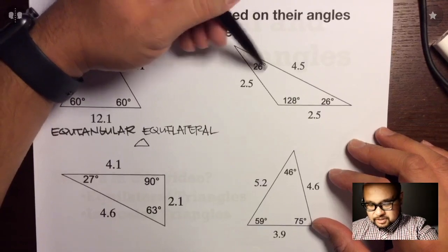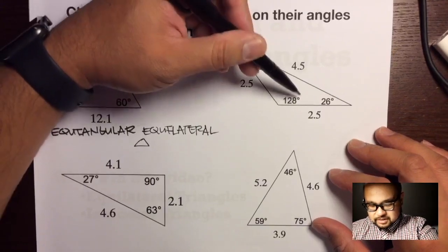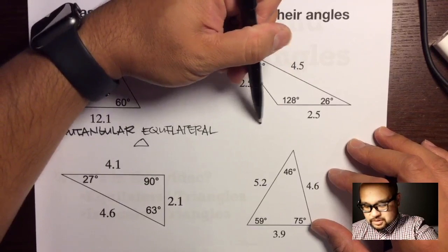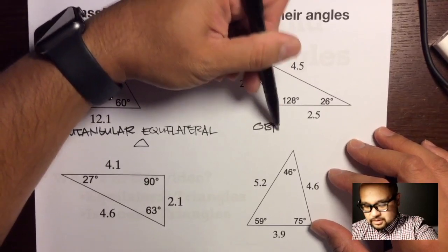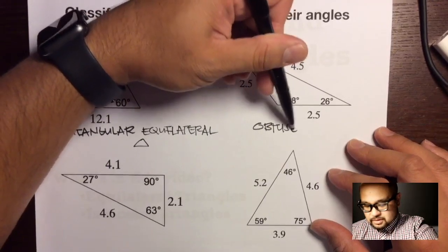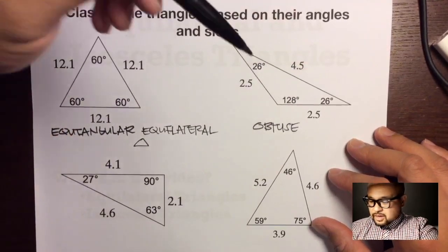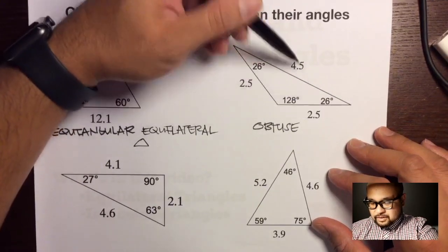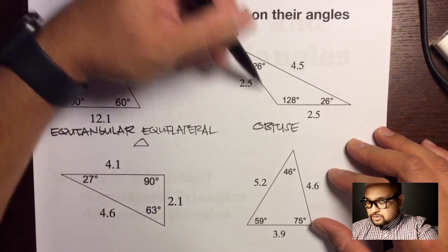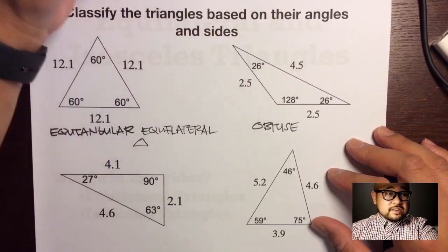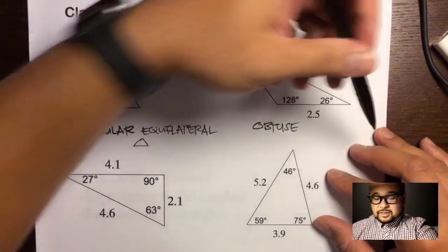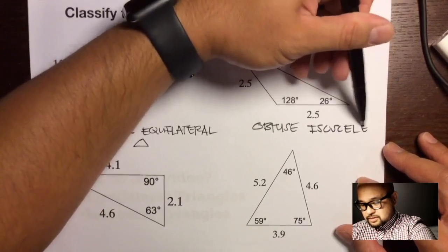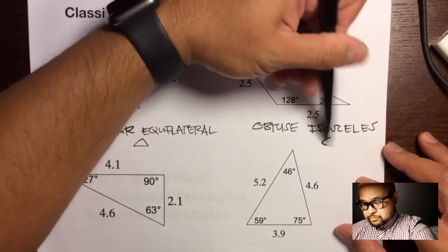For the next triangle: angles are 26°, 128°, and 26°. The 128° angle is greater than 90°, so this is obtuse. The sides are 2.5, 2.5, and 4.5 — two sides are congruent. So this is an obtuse isosceles triangle.